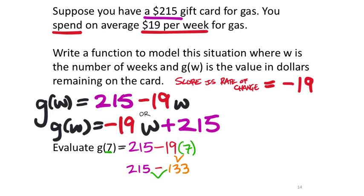I think I can fit that in there, $82. So after 7 weeks, it appears on this card, and that's G(W), but it's G(7). After 7 weeks, you'd have $82 left on the card. That's kind of small. I thought I had less space than I did. $82. Yeah, we should label this. What's the value in dollars? It even asked for it right there.